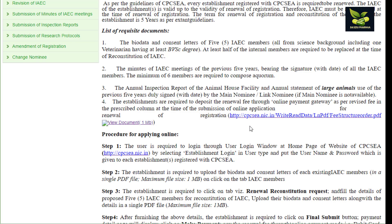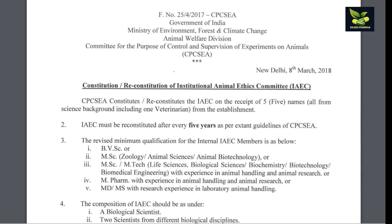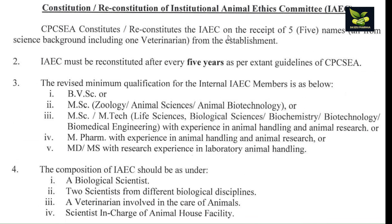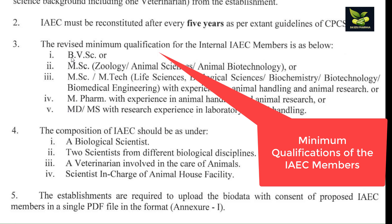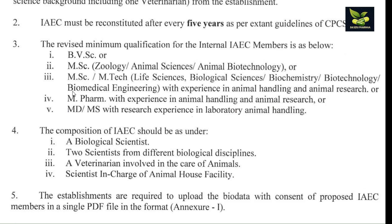This is the document in which the constitution is given. As already mentioned, every five years it is changed, and there are five main members. The qualifications can be: BVSc — Bachelor of Veterinary Science; MSc in Zoology, Animal Science, or Animal Biotechnology; MSc or MTech in Life Sciences, Biological Sciences, Biochemistry, Biotechnology, Biomedical Engineering with experience in animal handling and research; MPharm with experience in animal handling and research; or MD or MS with research experience in laboratory animal handling.